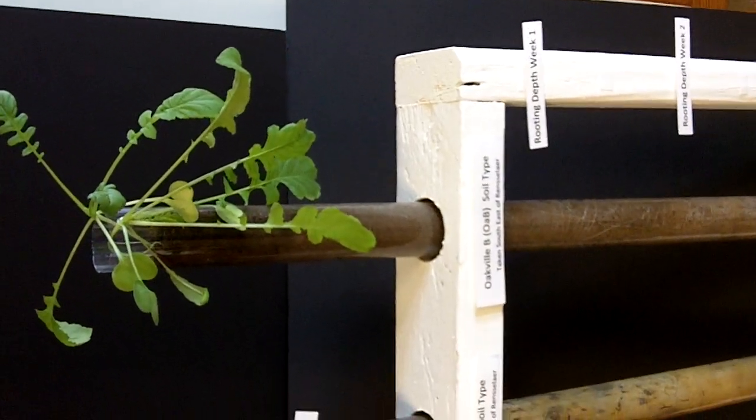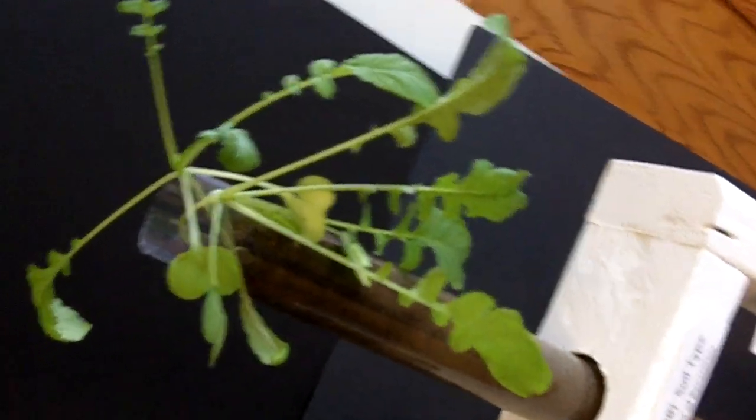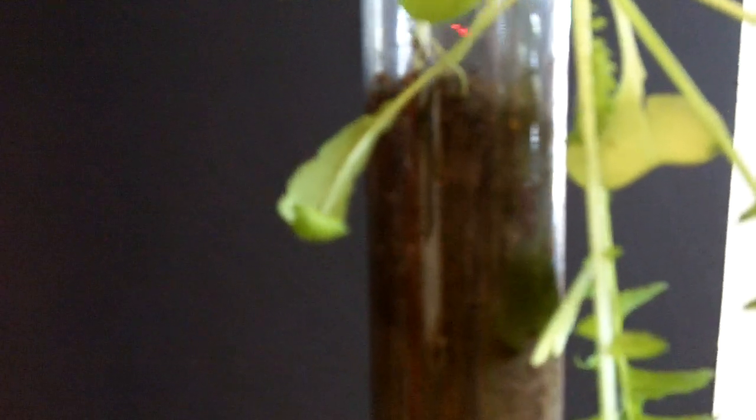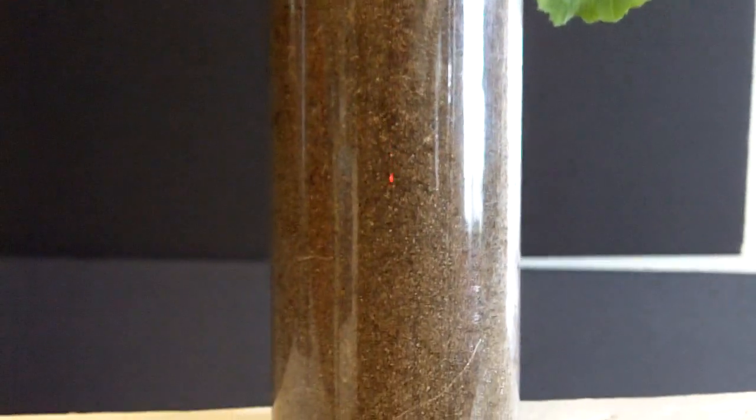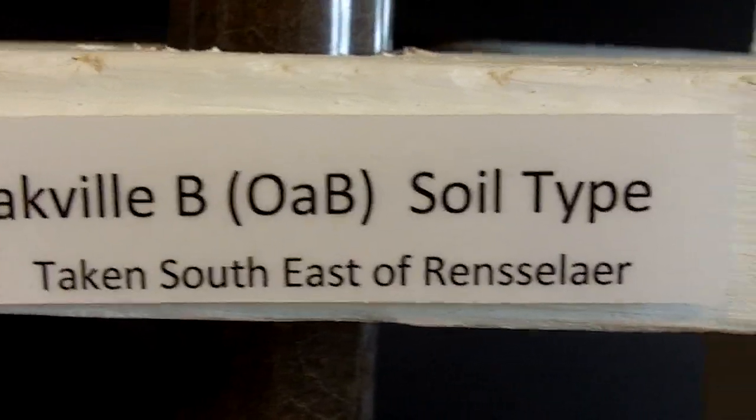This is a soil boring of an Oakville sandy loam soil and this is two radishes that were seeded June 20th, 2012. What this is going to show is the rooting growth through the actual soil profile, so this is a literal soil boring taken and put into a tube.